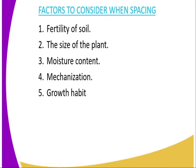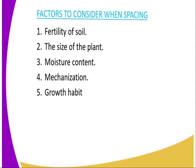The fifth factor is the growth habit of the plant. For the spreading type, they require a wider spacing. While for those crops which do not spread or don't have a spreading behavior, they require a closer spacing.